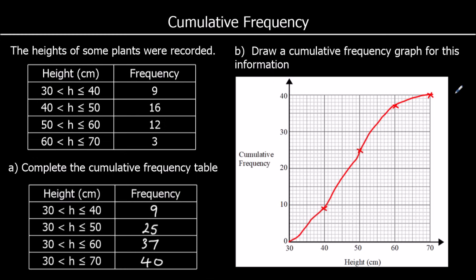That is a cumulative frequency graph. We could be asked all sorts of different questions now. So we could be asked for the median. The median is the middle number. There are 40 plants, so the median — we're going to go halfway, so at 20 — and then we go along to the line and down, and we read off the median. So our median is around 48.